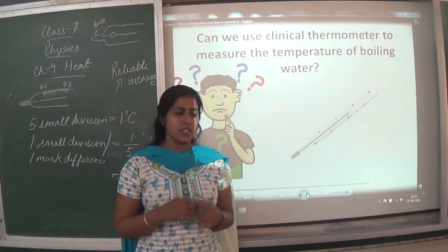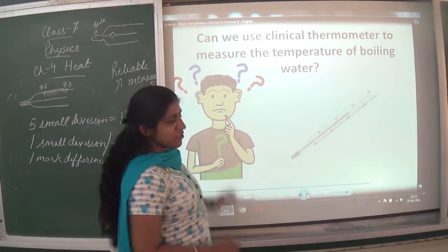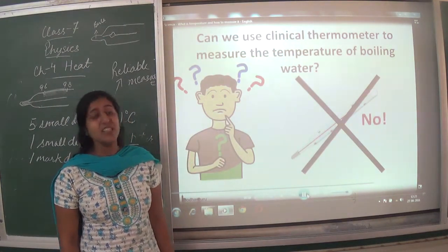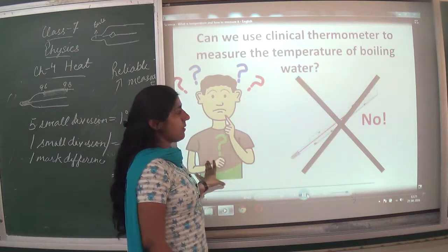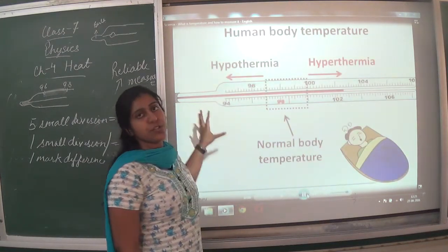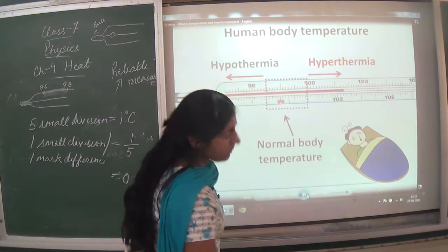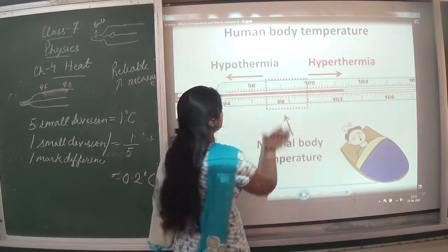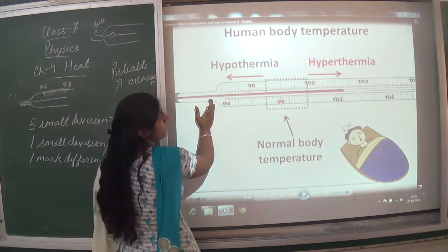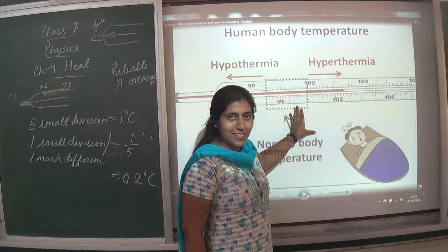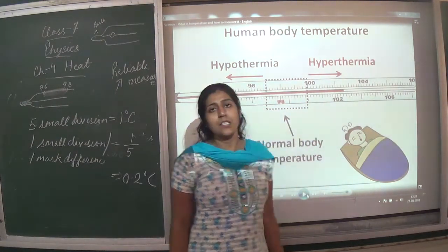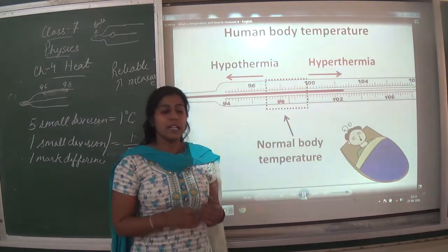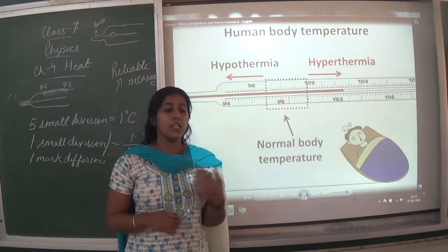The digital thermometer is also upgraded and easy to use. Can we use a clinical thermometer to measure the temperature of boiling water? The answer is no — the clinical thermometer is only used to measure human body temperature. Any temperature less than normal body temperature is hypothermic, and any higher is hyperthermic.